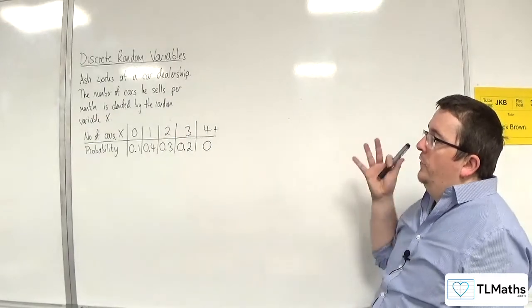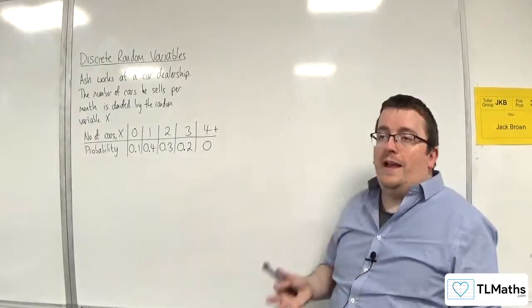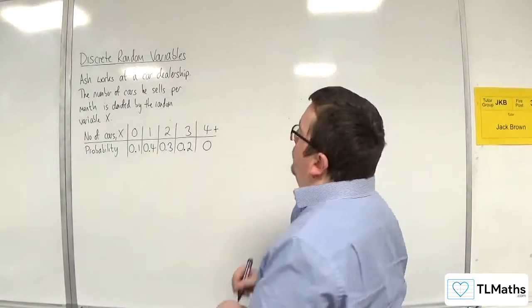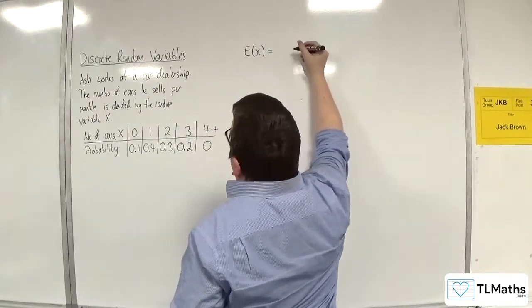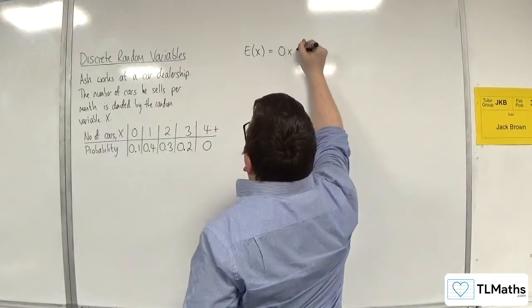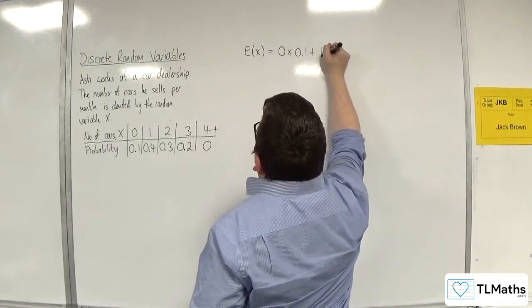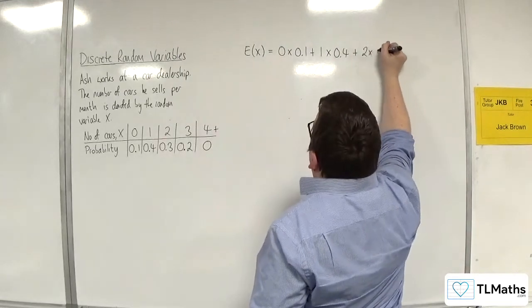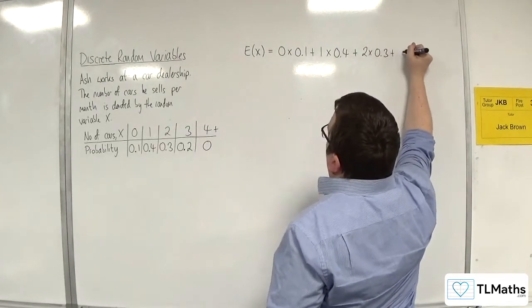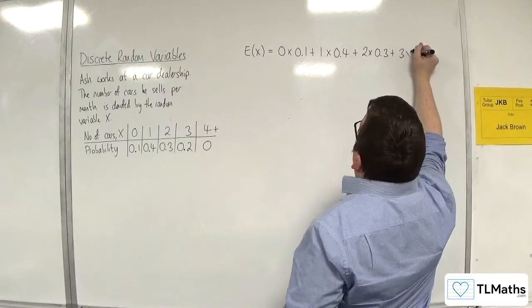So, the first thing that we're going to do is we're going to work out E of X. So, E of X is going to be equal to 0 times 0.1 plus 1 times 0.4 plus 2 times 0.3 plus 3 times 0.2.